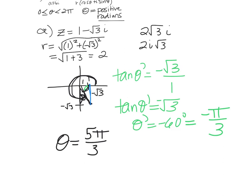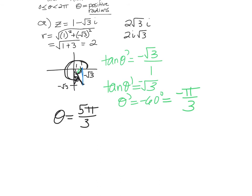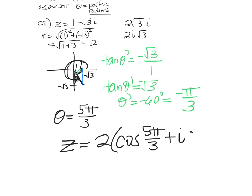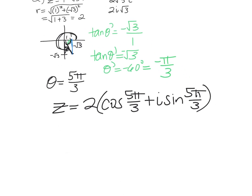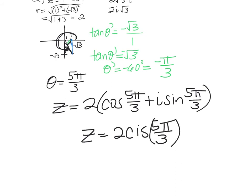We have all our parts: R equals 2, theta equals 5π/3. So this complex number equals 2 times (cosine(5π/3) plus i sine(5π/3)). Some people will write it as 2 cis(5π/3). Now, part B — the next one's not going to be so nice. This is going to be the first step to what we're doing tomorrow.